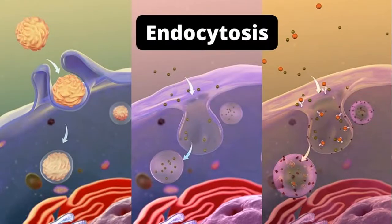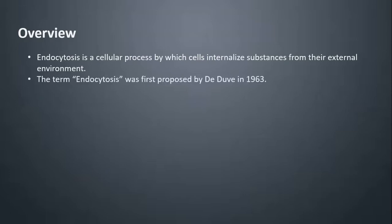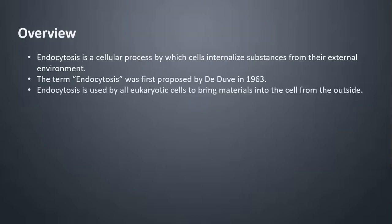Today in this video I will discuss about endocytosis. Endocytosis is a cellular process by which cells internalize substances from their external environment. The term endocytosis was first proposed by Detuve in 1963. Endocytosis is used by all eukaryotic cells to bring materials into the cell from the outside.